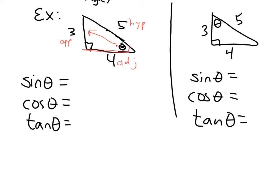Sine is opposite over hypotenuse. So, in this particular case, it will have a ratio value of three-fifths. Our cosine is adjacent over hypotenuse, so it will have a value of four-fifths. And our tangent is opposite over adjacent, so it will have a value of three-fourths.